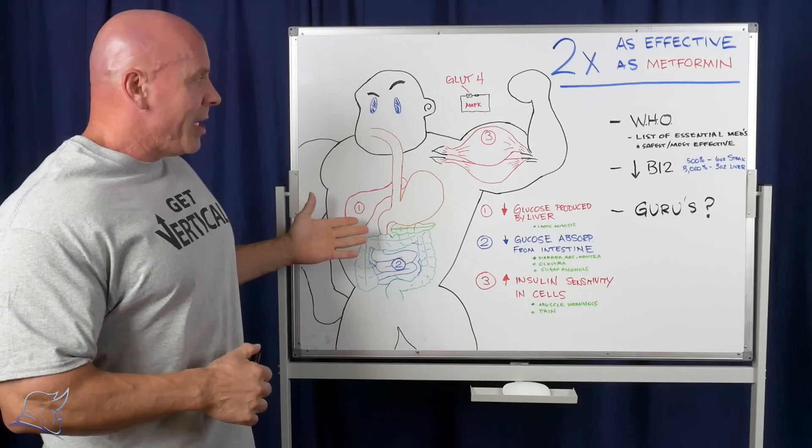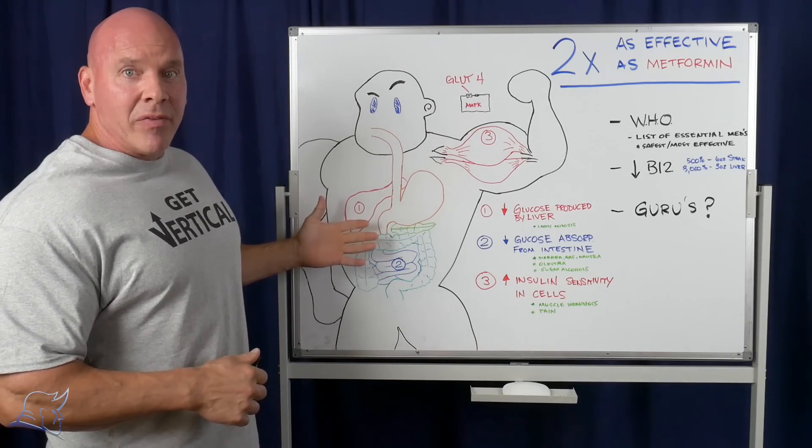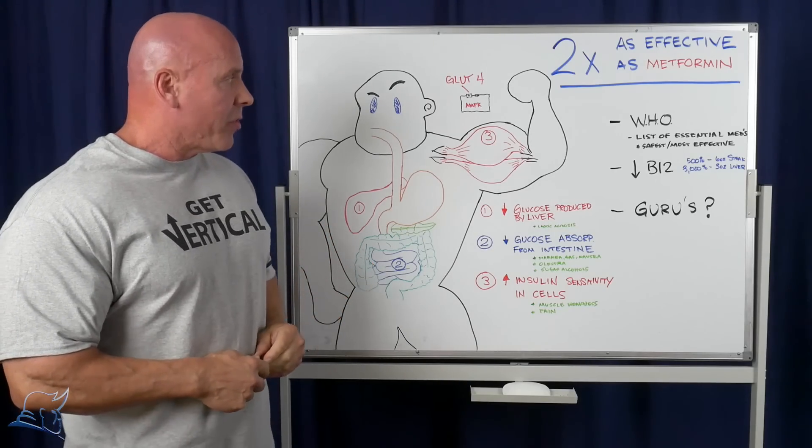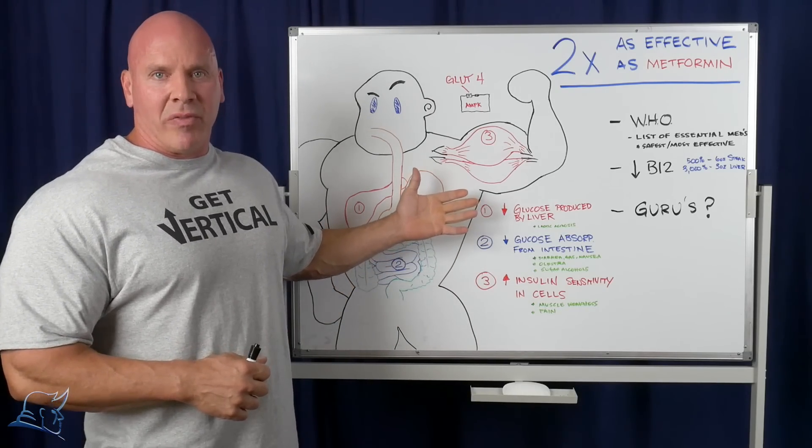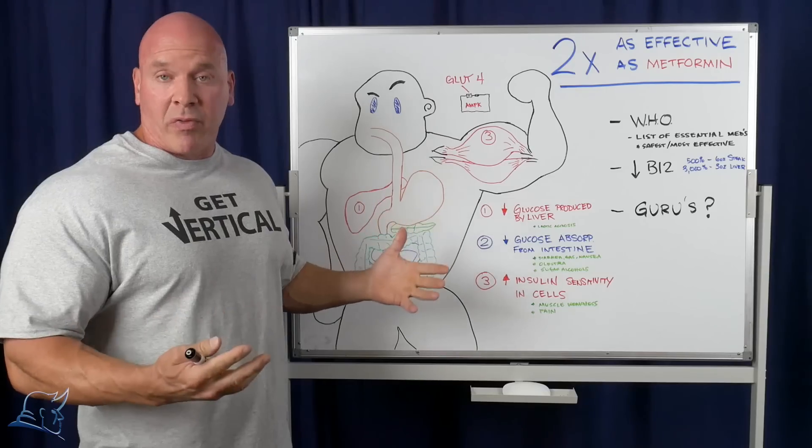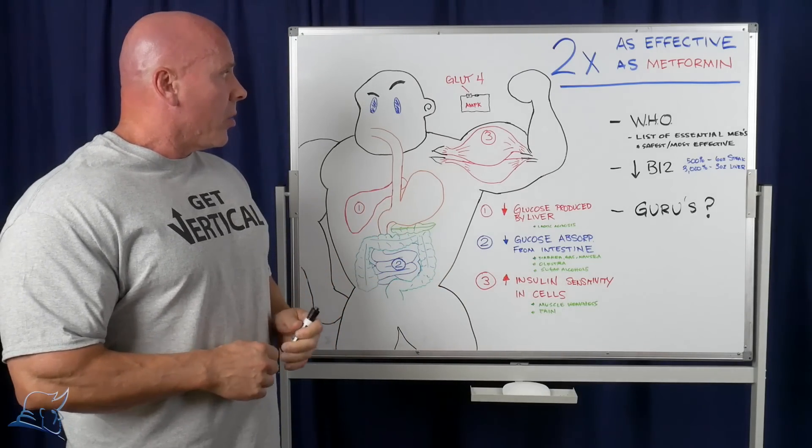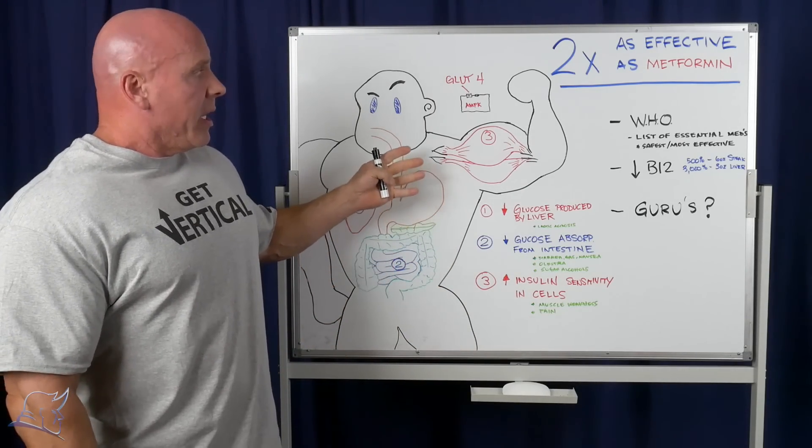Unfortunately, when you start limiting glucose produced by the liver and you start not absorbing your glucose from digestion from your intestines, that's not an optimal environment for performance, to produce strength or power or even endurance. And so it was bad advice.